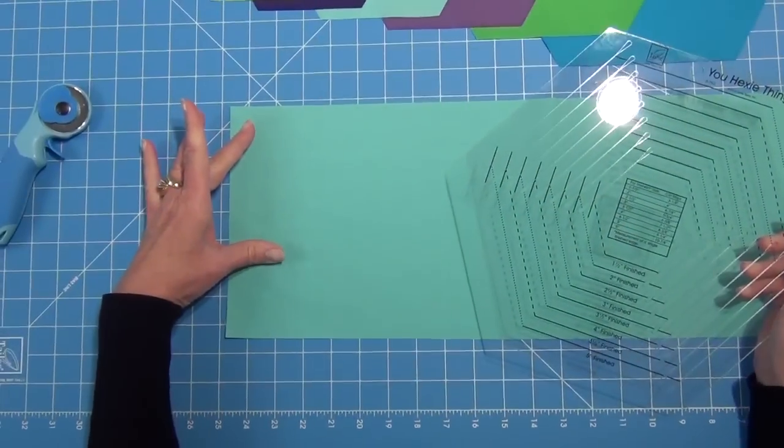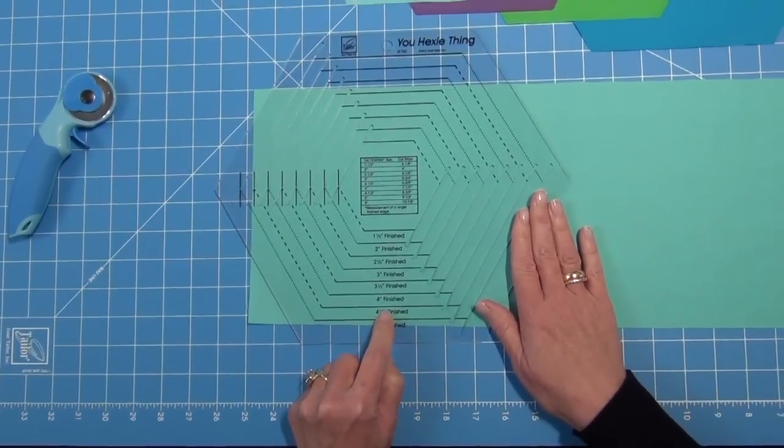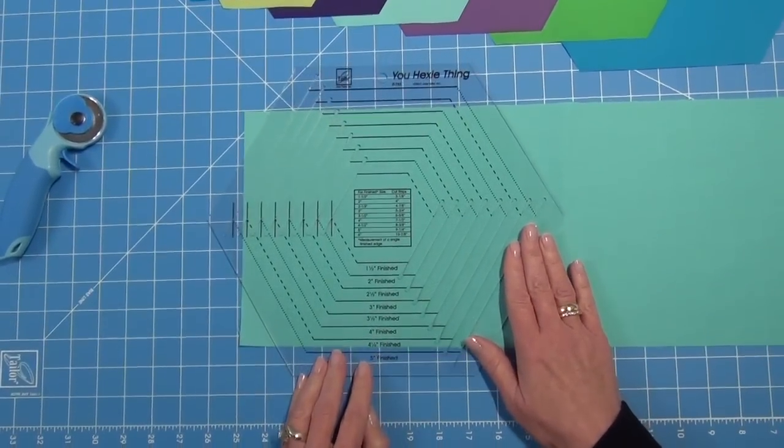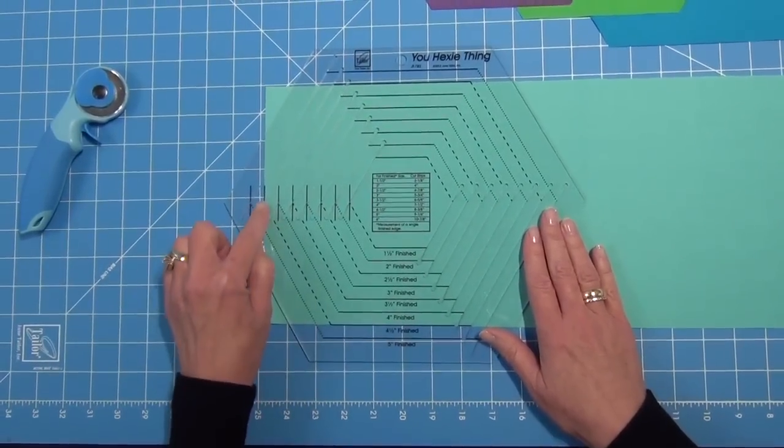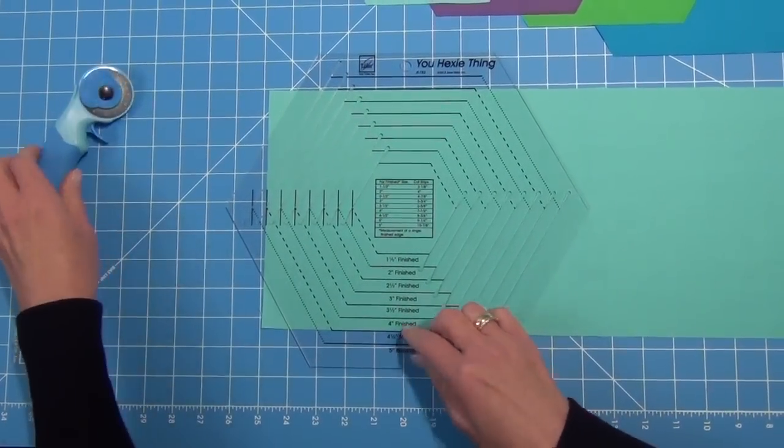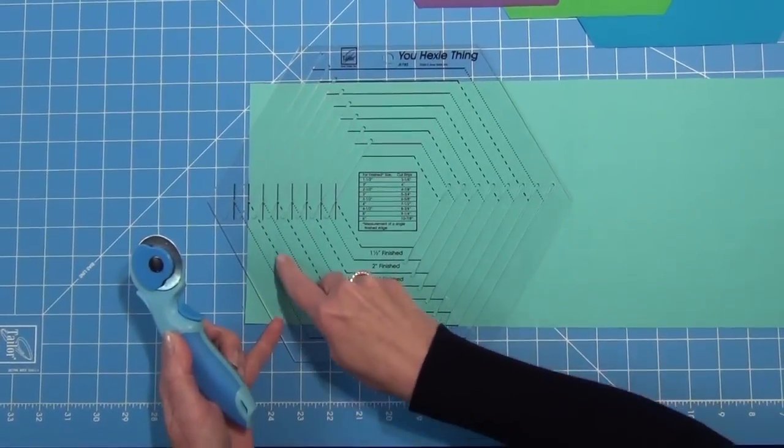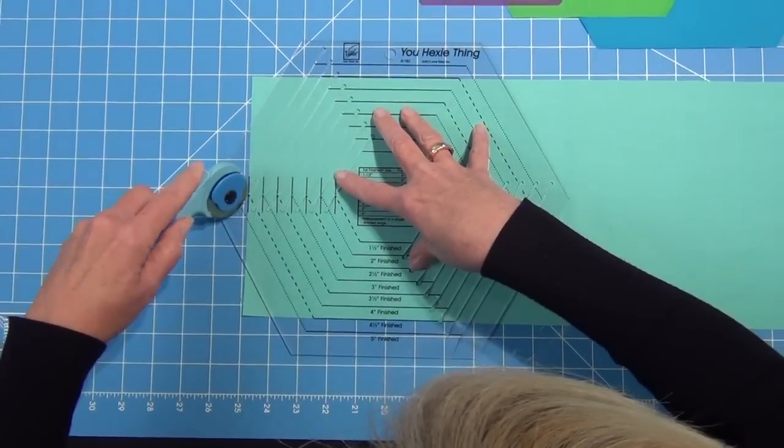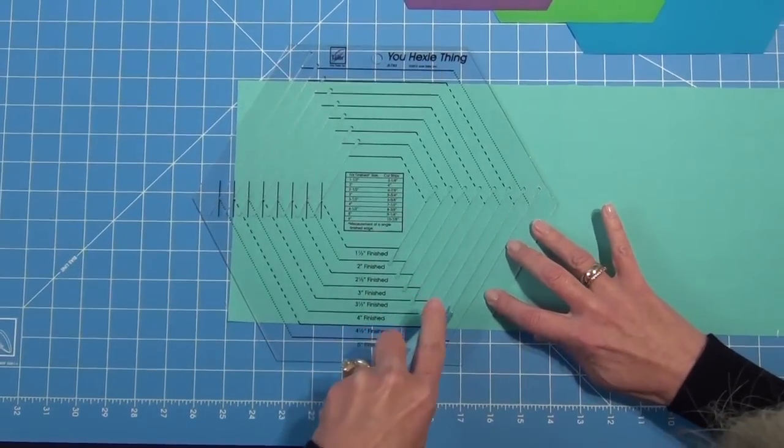Now that I have my 8⅜ inch strip cut, I lay the ruler over the top, find the 4½ inch finish line, and line that up on the bottom edge of my strip, on the side edge of my strip, and on the top edge of my strip. When I'm lined up in all three places, we're going to make two sets of cuts. So following along that 4½ inch line, you're going to insert your blade and make a cut on either side of your strip.